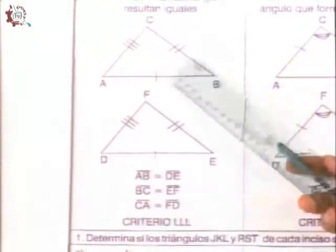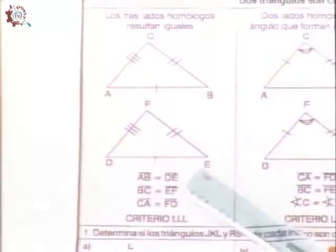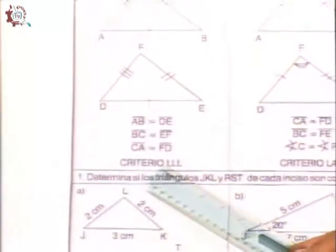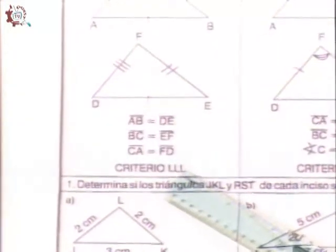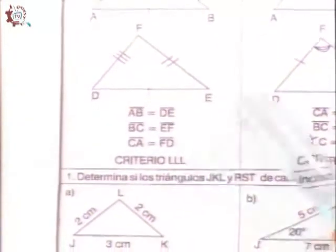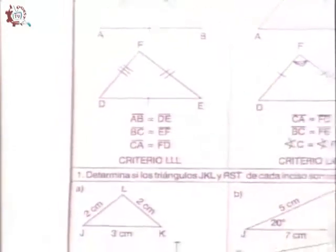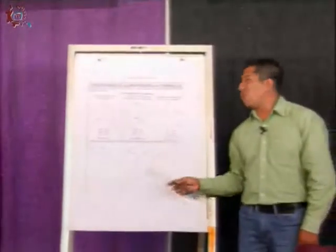Si ambos triángulos cumplen con este criterio de tener las mismas medidas, entonces vamos a llamar este criterio lado-lado-lado, representado por tres L. Este sería nuestro primer criterio de congruencia para decir que los dos triángulos son congruentes.